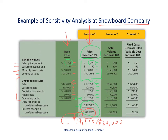We also have some other scenarios here showing what would happen if sales volume goes down 10%, that is, to 630 units from the original base case of 700 units. The third scenario shows what will happen if two things change at once.